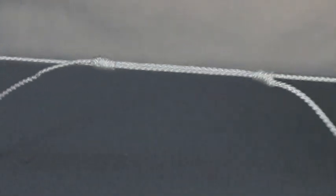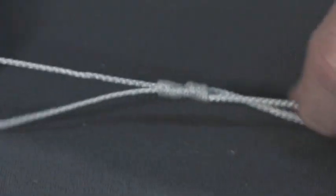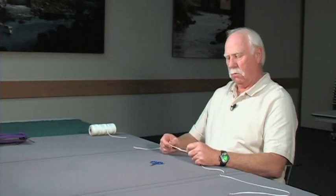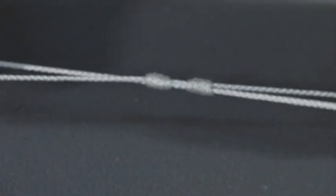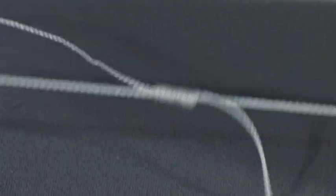Then once you've done that, pull on both of your main lines and bring those two knots together. And then tighten everything up. Pull on all four ends which will tighten the knots up and bring them back together.